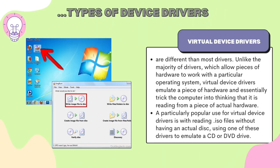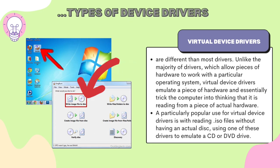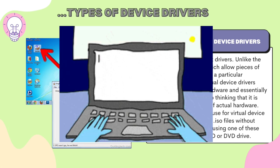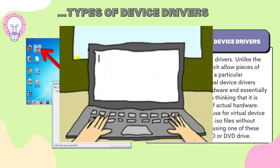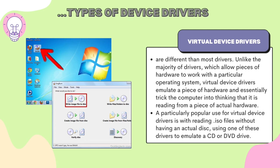The last type is the virtual device driver. Virtual device drivers are different from most drivers. Unlike the majority of drivers, which allow pieces of hardware to work with a particular operating system, virtual device drivers emulate a piece of hardware and essentially trick the computer into thinking that it is reading from actual hardware. A particularly popular use of virtual device drivers is reading ISO files without having an actual disk, using one of these drivers to emulate a CD or DVD drive.